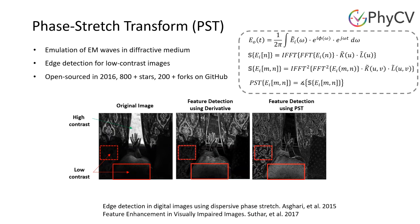The edges can be further enhanced by applying thresholding and morphological operations. In general, PST is a computationally efficient edge and texture detection algorithm with exceptional performance in visually impaired images. PST was open sourced in 2016 and has more than 800 stars and 200 forks on GitHub as of mid-2022.